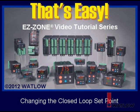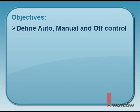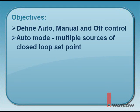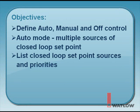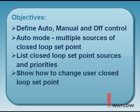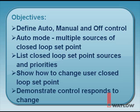Welcome to That's Easy, the video tutorial series that helps you use Watlow EasyZone products. In this installment, we will define auto, manual, and off modes of control, show that there are multiple sources for closed-loop setpoint generation while in auto mode, list and indicate the order of priority for these sources, show how to change the user's requested closed-loop setpoint using the keypad, and demonstrate that the controller will respond to your request.